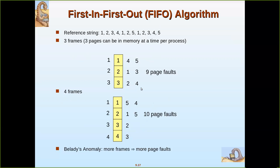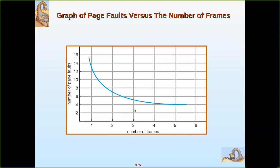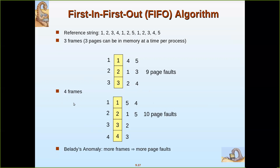What we observed previously is that when you increase the number of frames, page faults decrease. But here in this case, even if you increase the number of frames, the page faults also increase. This happens sometimes and we call it Belady's Anomaly — more frames leads to more page faults. This is because the page that is replaced is sometimes asked for again immediately.